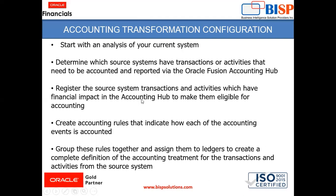The third step is to register the source system transactions and activities that have a financial impact in Accounting Hub, making them eligible for accounting. After that, create accounting rules that indicate how each accounting event is accounted. Finally, group these rules together and assign them to ledgers to create a complete definition of accounting treatment for the transactions and activities from the source system.